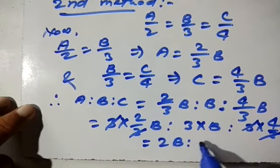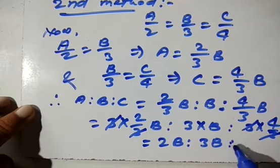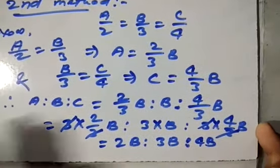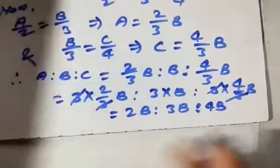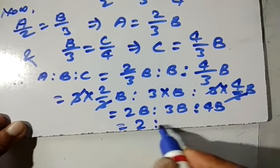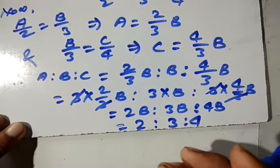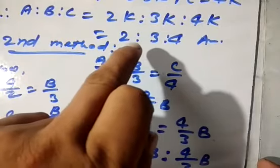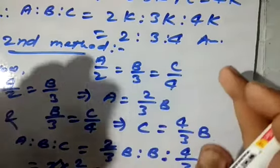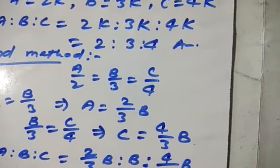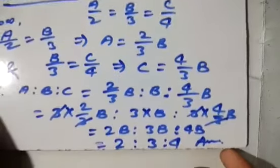We get: 3 × (2/3)b is to 3 × b is to 3 × (4/3)b, which gives 2b is to 3b is to 4b. Dividing these terms by b, we get 2 is to 3 is to 4. This is the simplest form of the ratio and the final answer to the given question. In both the first and second methods the answer is the same. Thank you for watching this video. The remaining questions from this chapter will be continued in the next part.